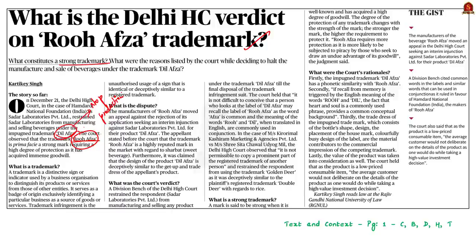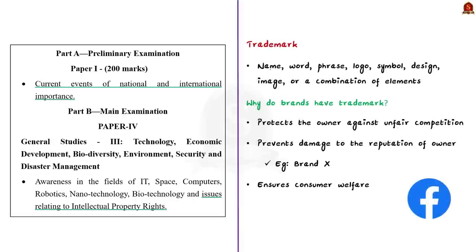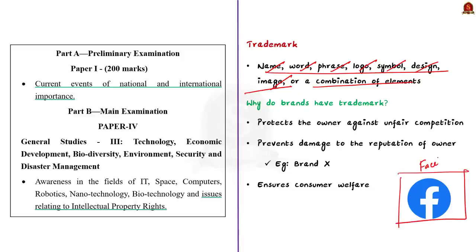Now we will learn about trademark from a UPSC perspective. A trademark is typically a name, word, phrase, logo, symbol, design, image, or a combination of these elements. Once you see a symbol, you can immediately associate it with a brand — for example, the Facebook 'F' symbol. Why do brands have trademarks? Because it protects the owner against unfair competition and prevents damage to the reputation of the owner.